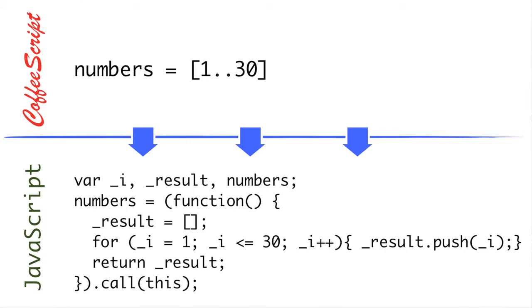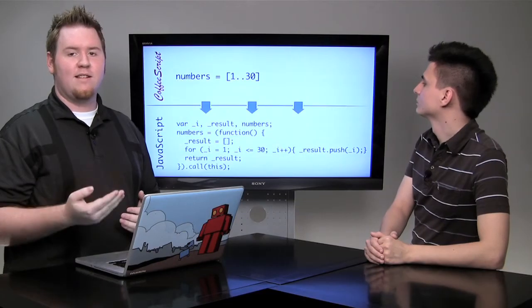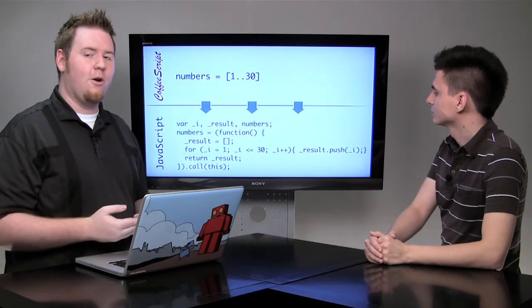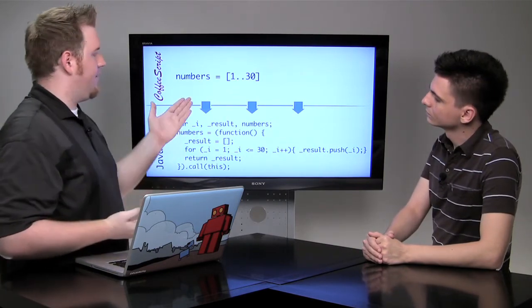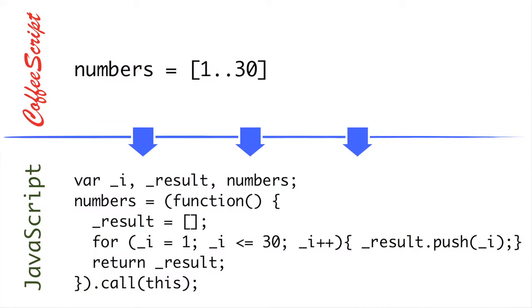But it gets smart. If there are a lot of values to the point where listing them out manually would be longer than the code needed to generate them, it actually gives us the generated code. So for the numbers 1 through 30, instead of just giving us the literal numbers, it actually gives us the code to generate the numbers 1 through 30.